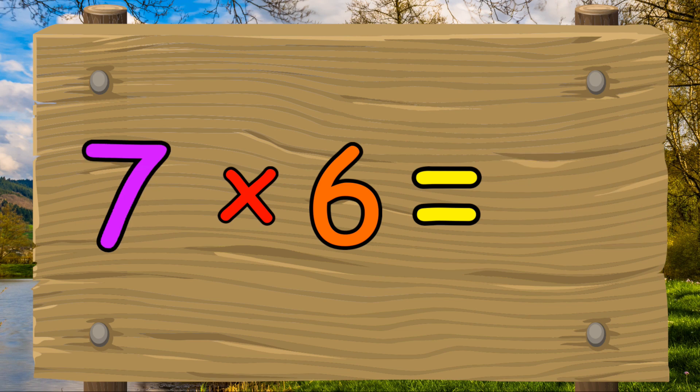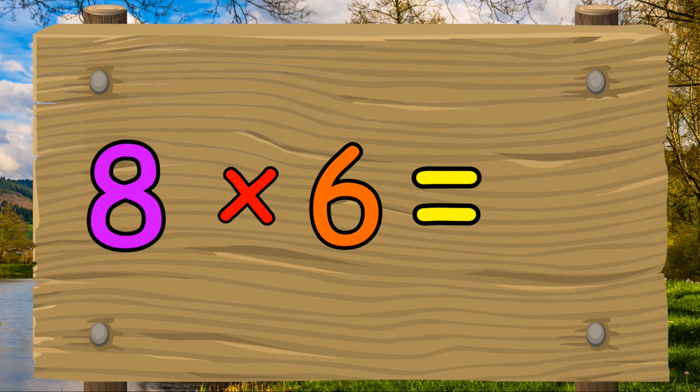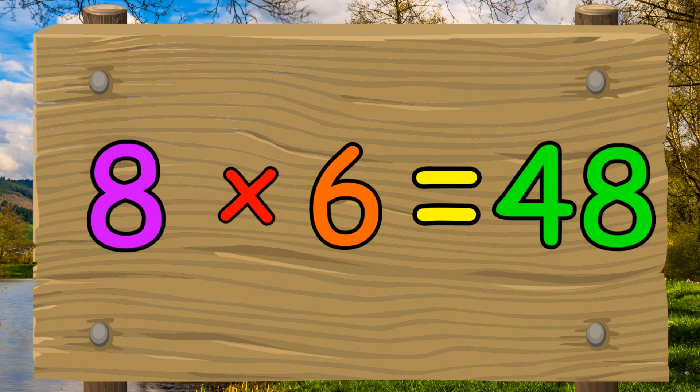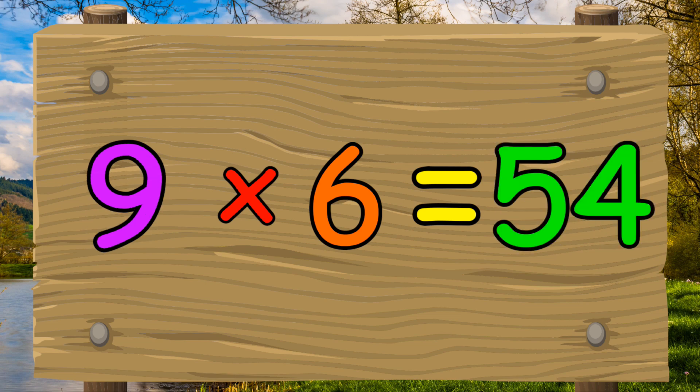Seven times six equals forty-two. Eight times six equals forty-eight. Nine times six equals fifty-four.